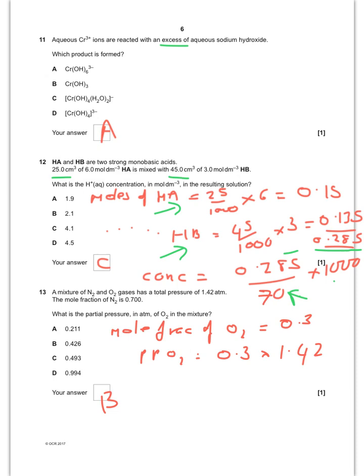Okay, mixture of N2 and O2 has a total pressure of 1.42 atmospheres. Mole fraction is 0.7 of nitrogen. What is the partial pressure of oxygen? Well, obviously mole fractions they all have to add up to one. So if your mole fraction of N2 is 0.7, then the mole fraction of O2 must be 0.3. Then the partial pressure of O2 is going to be your mole fraction times your total pressure and you will find that to be B.